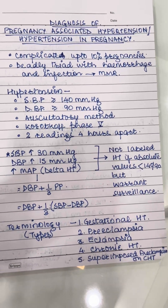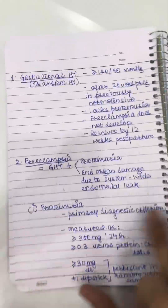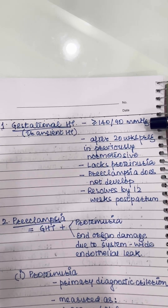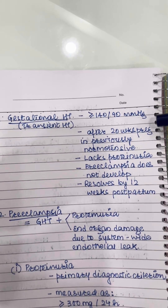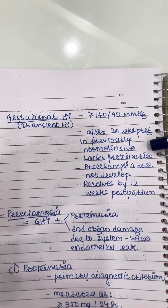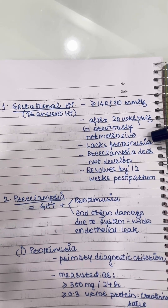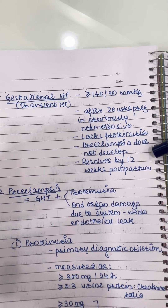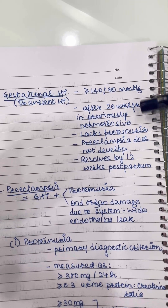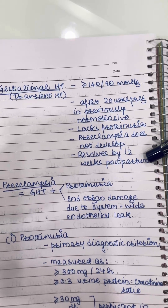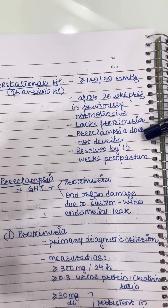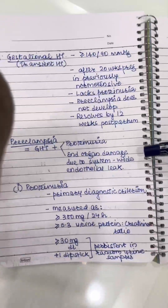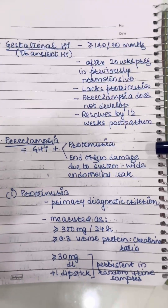Gestational hypertension is a rise of BP of 140/90 mmHg or more, noticed after 20 weeks of pregnancy in a patient who was previously normotensive. The patient should not have proteinuria or any other signs of preeclampsia, and the rise in BP should resolve by 12 weeks postpartum. This is therefore a retrograde diagnosis — if BP returns to normal post-delivery, only then can we label it as gestational hypertension.